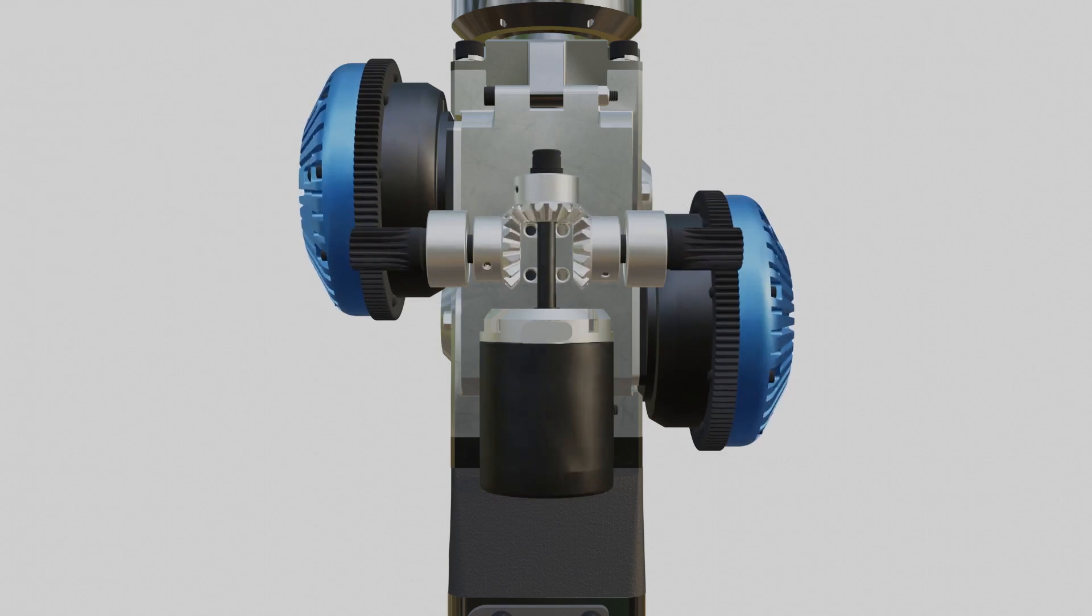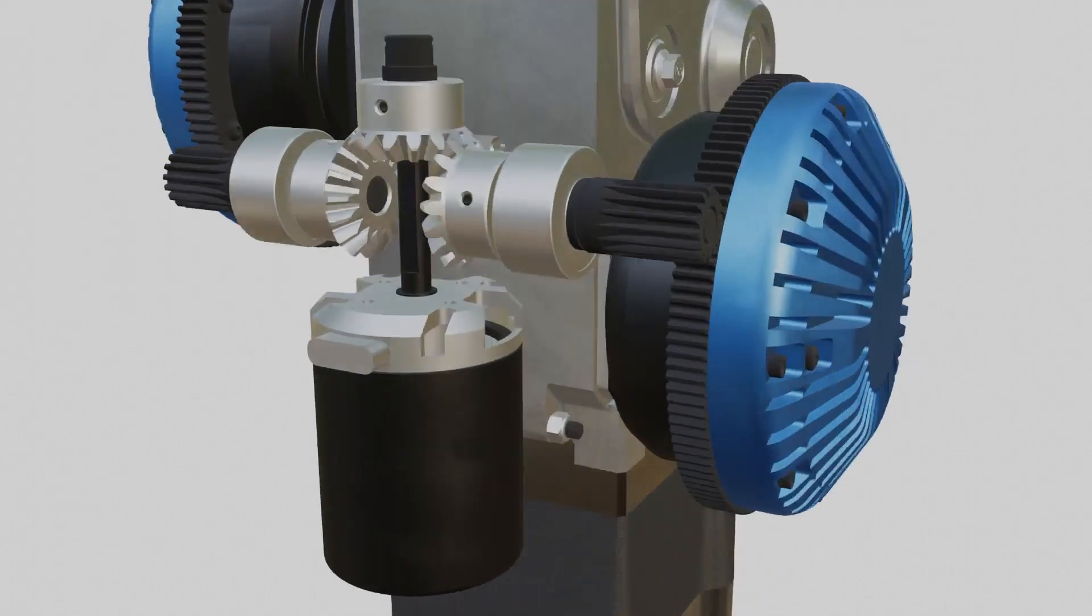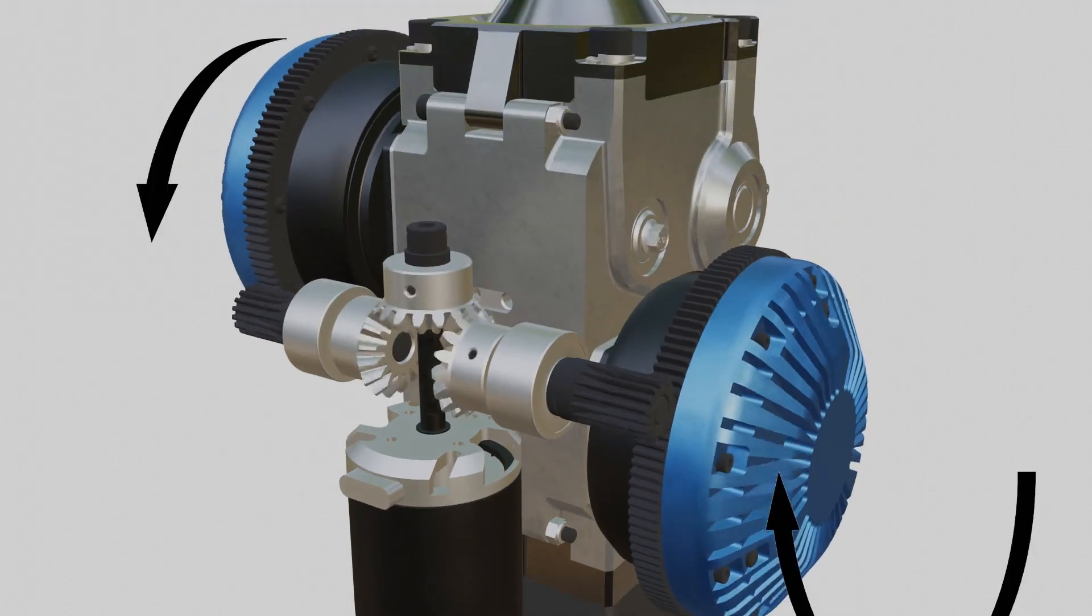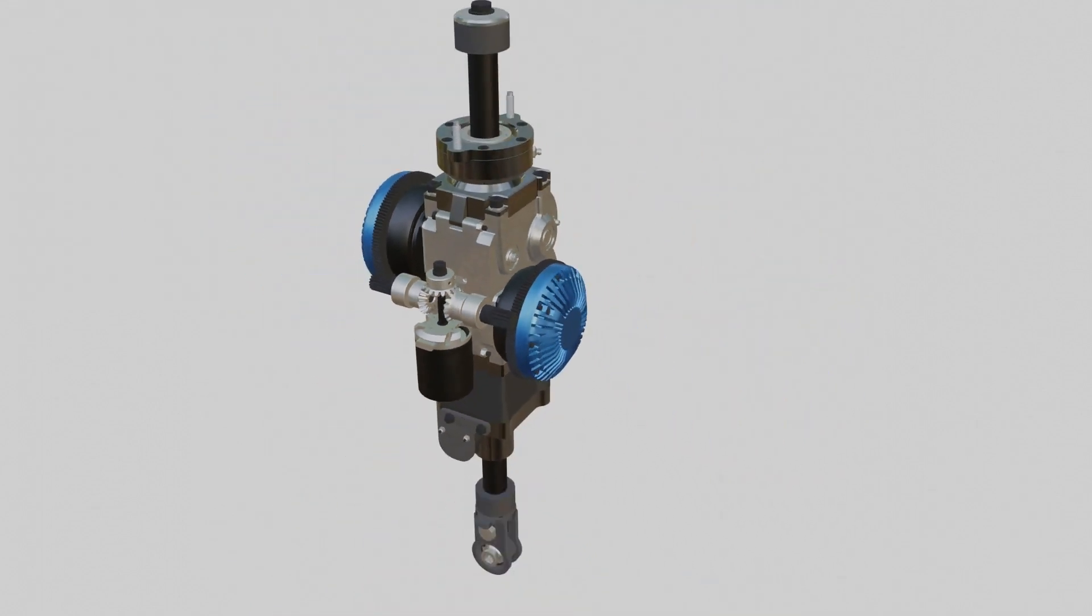The gearbox transfers the torque of the motor to the two output gears which are rotating in opposite directions. The rotation is then transferred to the clutches, which also turn in opposite directions.